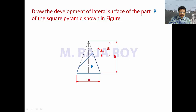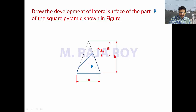Draw the development of lateral surface of part P of the square pyramid shown. This is the square pyramid, and this part is the required portion. For this portion, we have to draw the development. They are asking only for the lateral surface, so lateral surface means we can omit the base. Another way of doing this problem: draw the development of a square pyramid when it is cut by a section plane perpendicular to VP, inclined at 45 degrees to HP, and bisecting the axis. Total axis length is 40. They can give the problem in words or as a diagram.